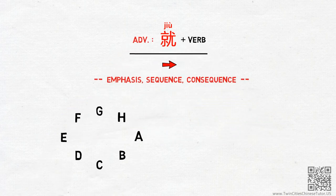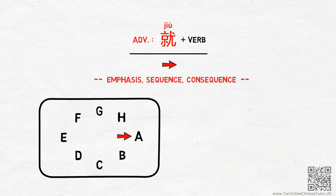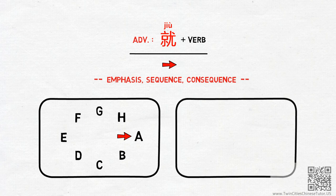If I show you an arrow pointing at the letter A among other letters, you naturally understand that I am trying to bring your attention to A by emphasizing it with the arrow. In a second scenario, if I tell you that X and Y are two events and I put an arrow between them, you would understand that the arrow indicates X leads to Y — X happens first, then Y happens. Keep these two pictures in mind, because most of the time, that is exactly what jiu does.